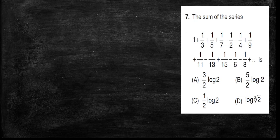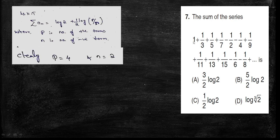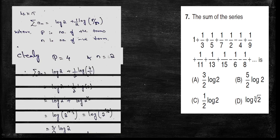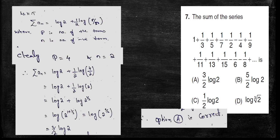Option number 7 — sum of a sequence. It is a lengthy process, but using the formula it is easy to solve. The formula is: summation an equals log 2 plus (1/2) times log(p/n), where p is the number of positive terms and n is the number of negative terms. Here p equals 4 (positive terms: 1, 2, 3, 4) and n equals 2 (negative terms). Simplifying gives (3/2) times log 2. So option A is the correct answer.